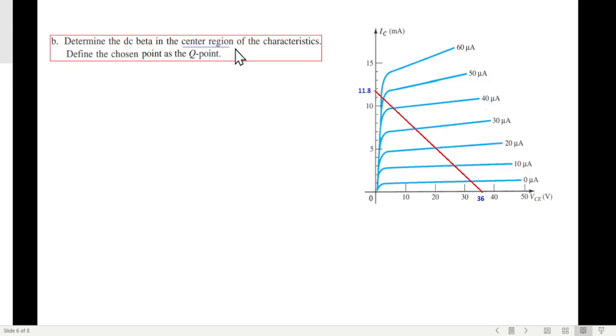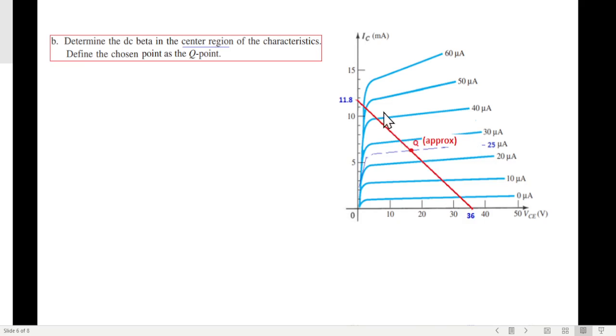Part B: Determine DC beta in the center region of the characteristics. So beta we have to first of all find and define the chosen point as Q point. So in the central region we have to find a Q point, which will be actually approximate Q point because we don't know exactly what is the center region. So what we'll do is, apparently between these two looks like a center region, so we'll assume a current in between the two, between 20 micro and 30 micro, to be 25 micro. So this point, where it touches the load line, will be our Q. Now this I'm calling it Q approximate because we are not sure about the IB.